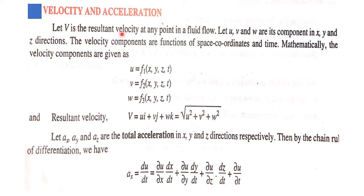The resultant velocity V is written in vector form as u·i + v·j + w·k, and its magnitude is calculated as V = √(u² + v² + w²).